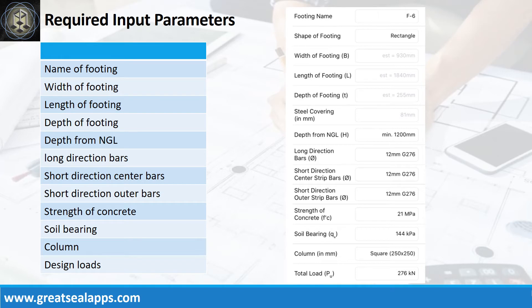Strength of concrete 21 MPa, soil bearing capacity 144 kPa, column 250mm by 250mm, and factored axial load 276kN.